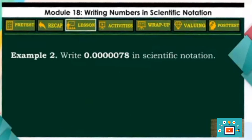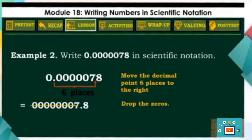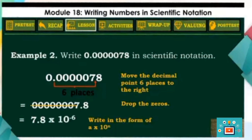Let us now write 7,810 million in scientific notation. Since there is a decimal point in the given number, we simply move the decimal point 6 places to the right and we will get 7.8. Then drop the zeros and write the number in the form A times 10 to the N, which is 7.8 times 10 to the negative 6. The exponent negative 6 comes from the number of places the decimal point has been moved.